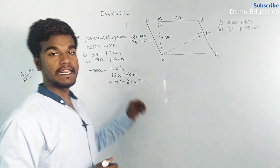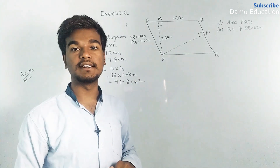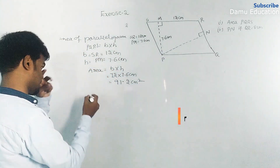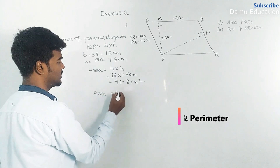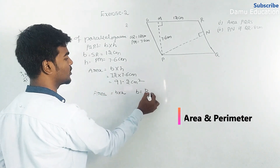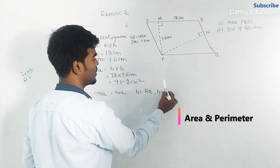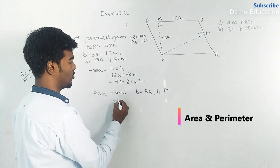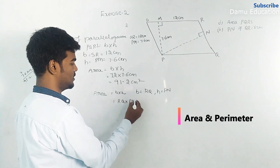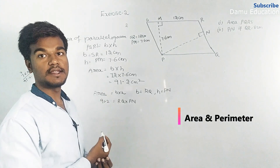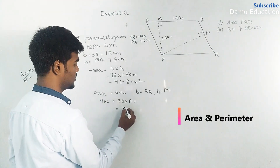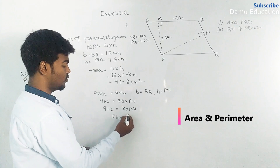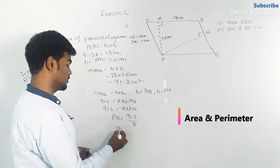Now we need to find the perpendicular distance PN. Using the area value already found, area of parallelogram equals base into height, where base is RQ and height is PN. So RQ into PN equals 91.2 centimeters square. RQ is 8 centimeters, so 8 into PN equals 91.2, meaning PN equals 91.2 divided by 8.